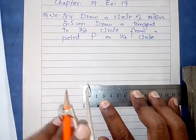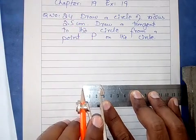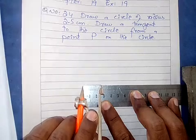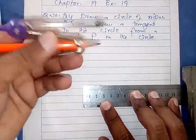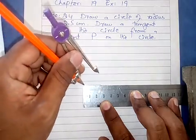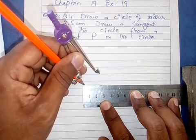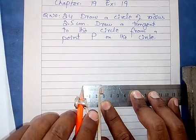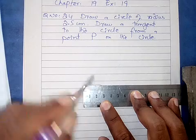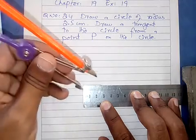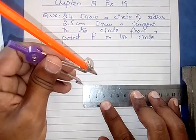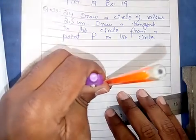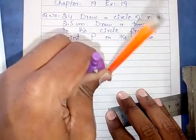یہ 2.5 cm کا radius ہے۔ اسی radius کا compass اٹھائیں۔ Again یہ آپ کے پاس 2.5 cm کا ہے۔ اب اسی point پر compass کی needle رکھ کر آپ نے ایک circle draw کرنا ہے۔